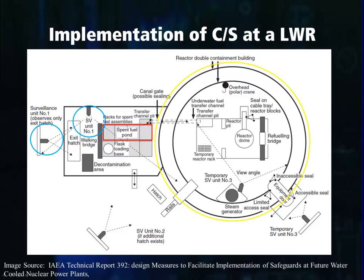Inside of reactor containment, you can see that there is only one video surveillance unit monitoring the area. There is a secondary unit applied monitoring the equipment door. You can see here that if an additional hatch exists at the facility, an additional video surveillance unit can be put in place to monitor the hatch for access.